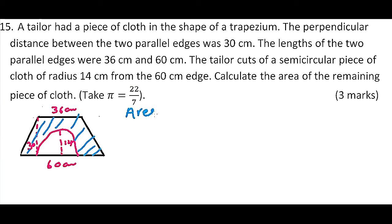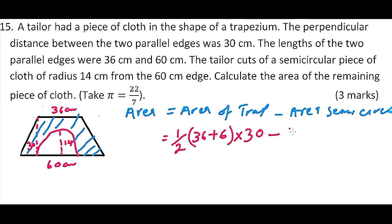So remaining area is equal to area of trapezium minus area of semicircle. So the area of trapezium, we find it is a half, we add 36 plus 60 and we multiply by the height, so multiply by 30, minus the area of the semicircle is a half, the area of the circle which is 22 over 7 multiplied by R squared, that is multiply by 14 which is the radius multiplied by 14.